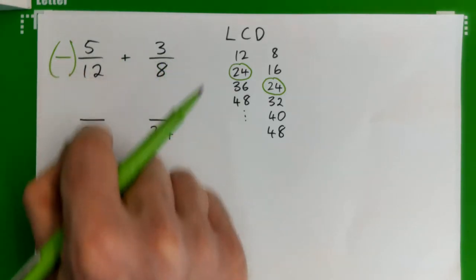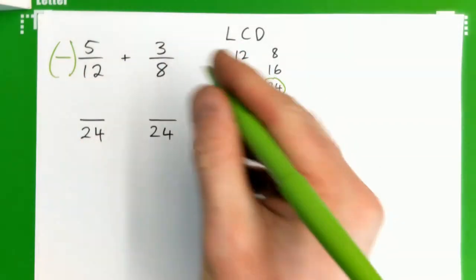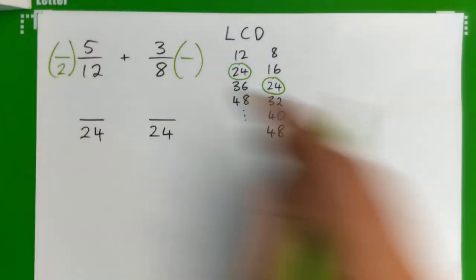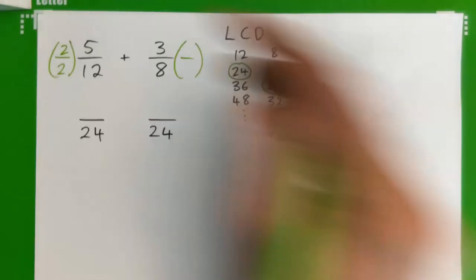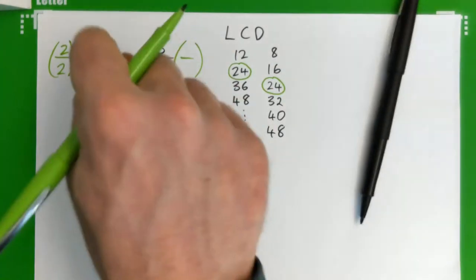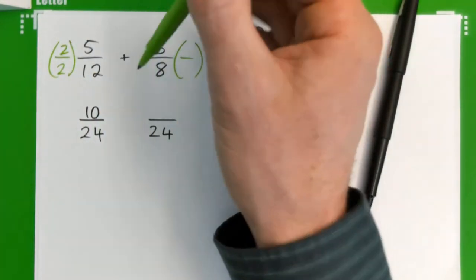In other words, what times 12 gives 24? So, 2 times 12 gives 24. So multiply the top and bottom by 2. We get 10 24ths. So 5 twelfths has become 10 24ths.